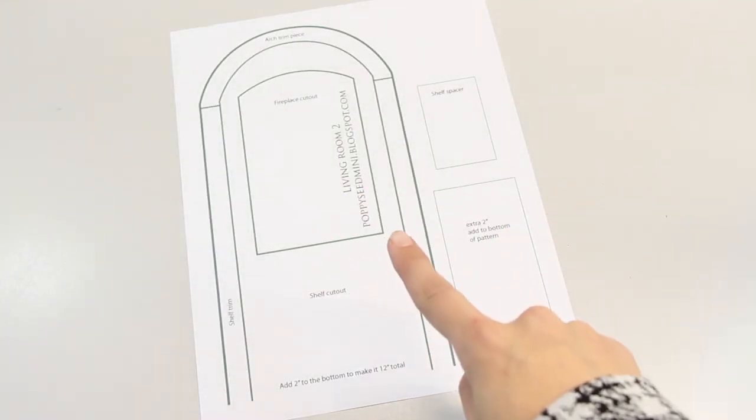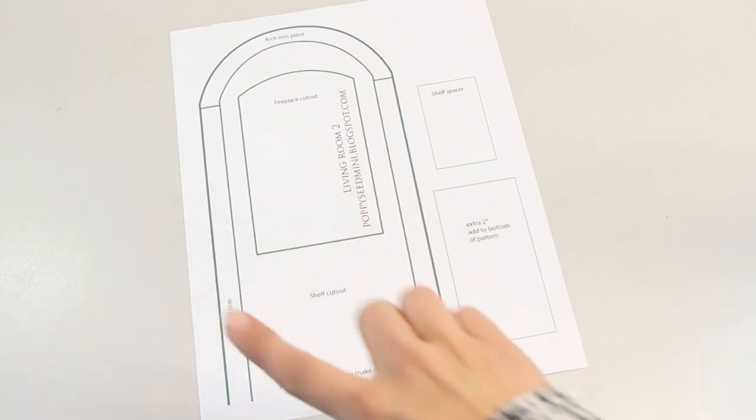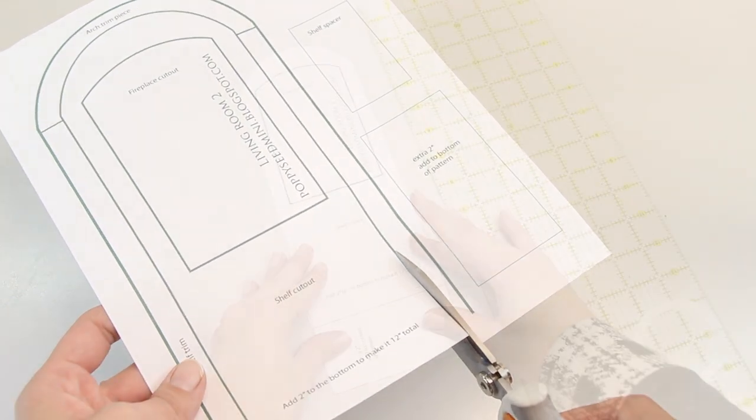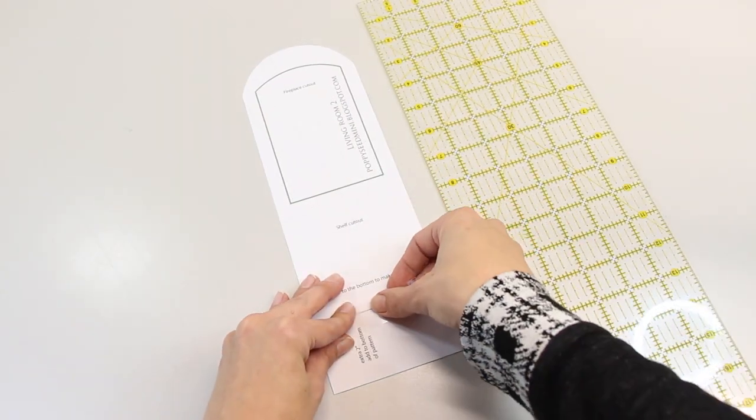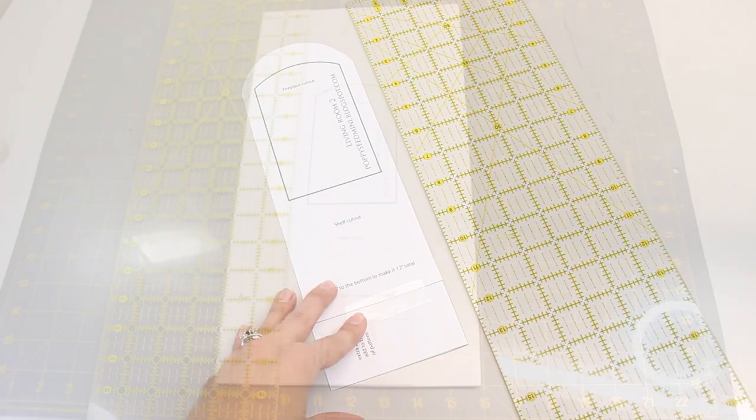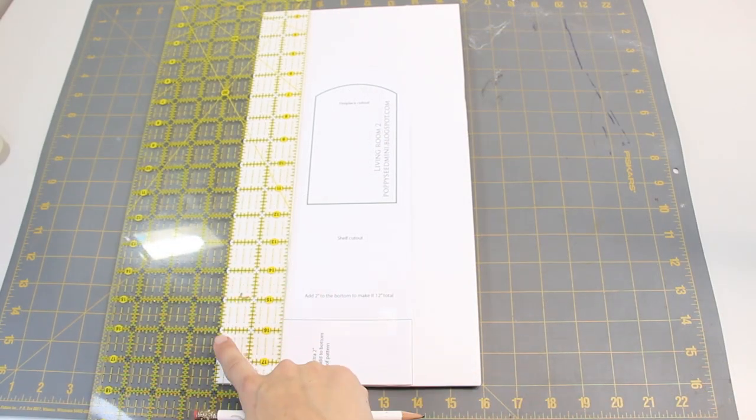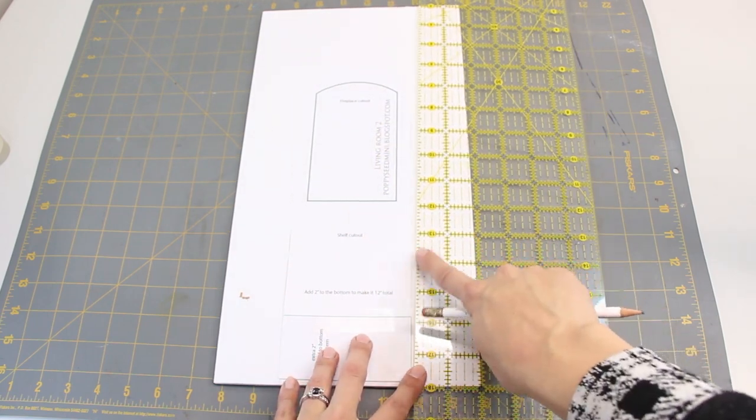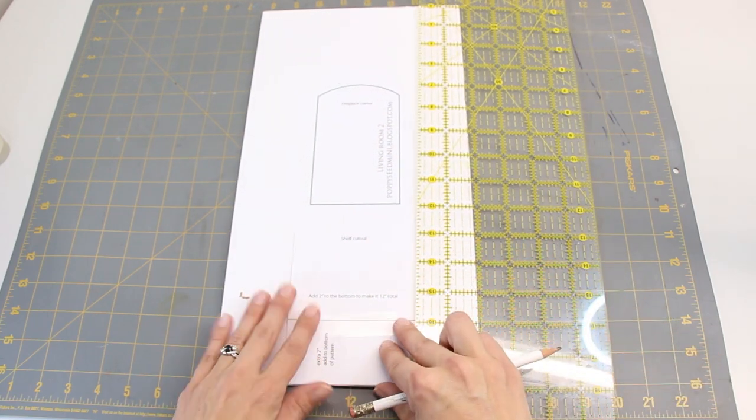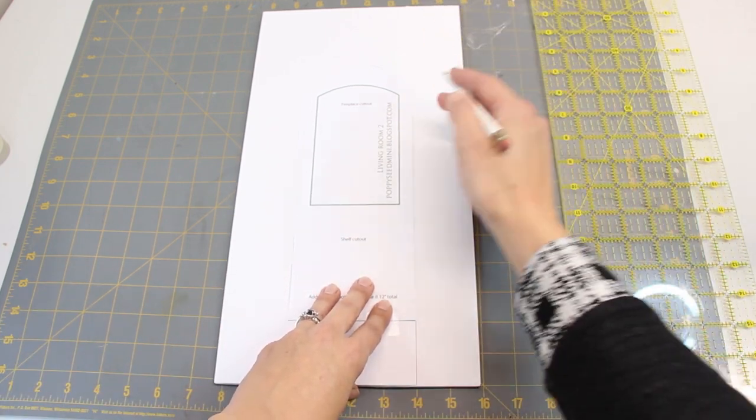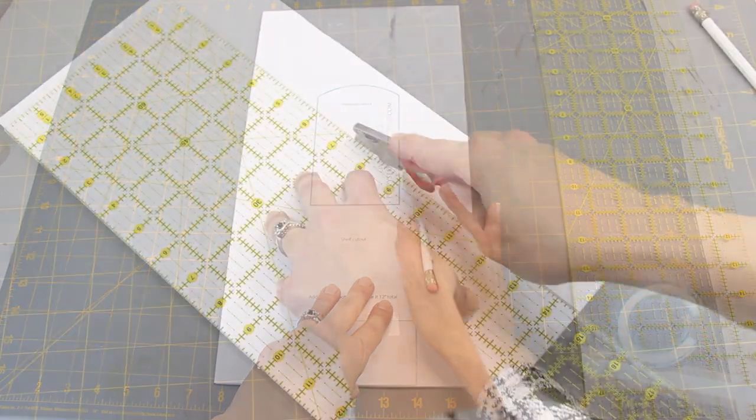Now we're going to make built-in shelves. For this part, you'll need this printable. Cut out the shelf cutout and tape the extra piece to the bottom. It should be 11 and a half inches total. Cut out an eight by 15 inch piece of foam board. Center the shelf cutout on the board. There should be two inches on either side. Draw around the pattern and cut it out.